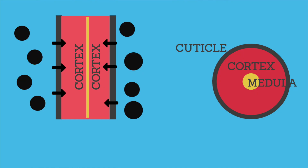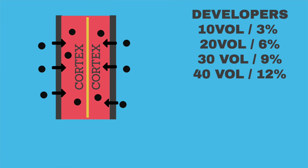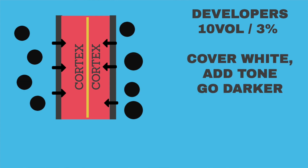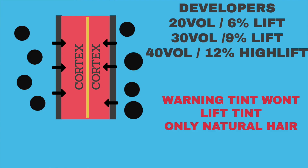Permanent hair color has different levels of activator: 10, 20, 30 or 40 vol, or 3, 6, 9 or 12 percent. The activator activates your tube of color and gives you different levels of lift. Generally speaking, if you simply want to cover gray, add tone or add some color, 10 vol or 3 percent is usually enough — but always check your manufacturer's specific guidelines. If you want to lift hair, and remember tint won't lift tint so you can only lift natural hair, then you'll be using 6, 9 or 12 percent, depending on how much lift you want.